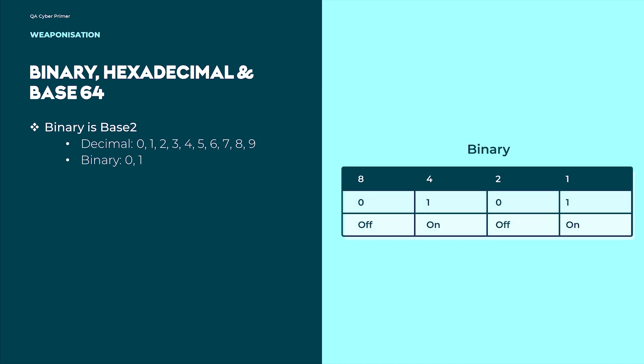Binary is a base2 numbering system. With decimal, we count from zero to nine, and once we exceed that value, we add a one into the most significant column. We do exactly the same with binary, except we only count from zero to one, and once we exceed this value, we add a one to the most significant column. This is done from right to left, starting with a one and continues in the chain by the power of two. Essentially, a one means that the number is being used, but a zero means it is not. As seen on the slide, the number five can be read in binary as 0101, with decimal numbers one and four being used, creating a decimal value of five. Understanding this numbering system is of fundamental importance to any work you will do within cybersecurity.